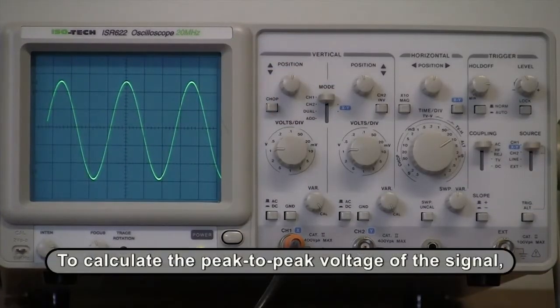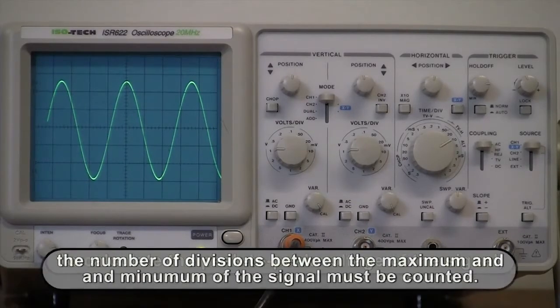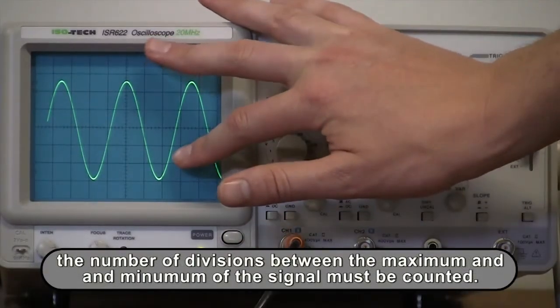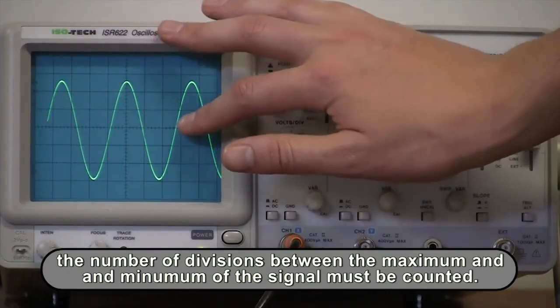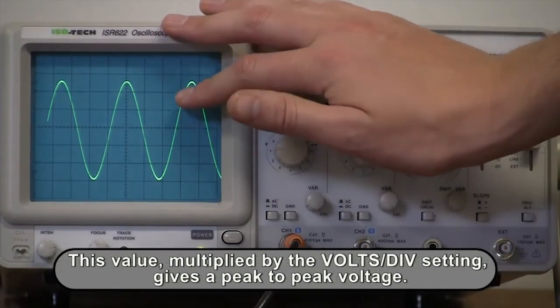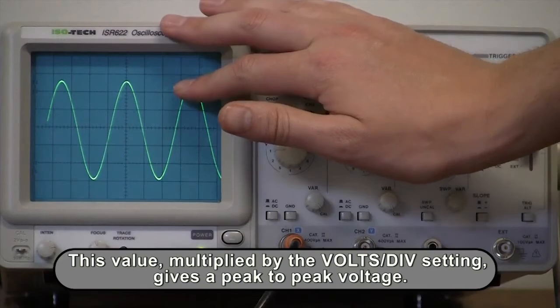To calculate the peak-to-peak voltage of the signal, the number of divisions between the maximum and minimum of the signal must be counted. This value multiplied by the volts per division setting gives a peak-to-peak voltage.